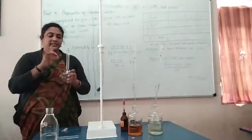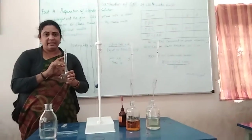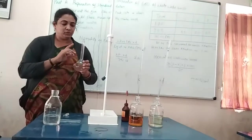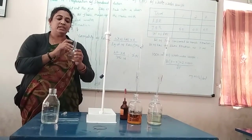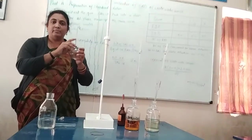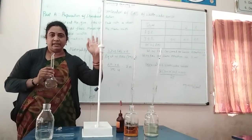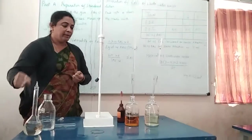To summarize Part A: weigh the salt, transfer it into a 250 ml volumetric flask, add H₂SO₄, make up the solution accurately to the mark, mix it well, and fill it in the burette. Part A is now complete.